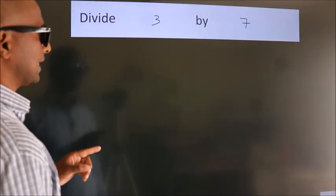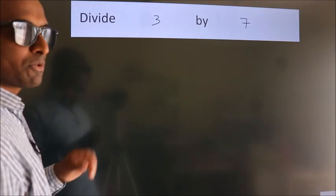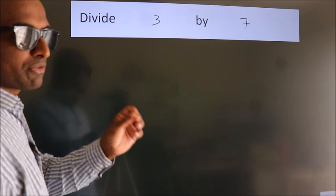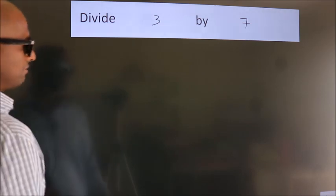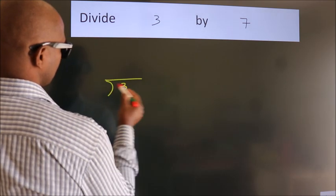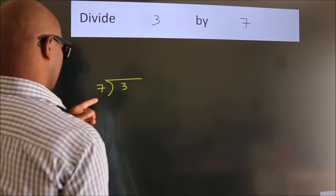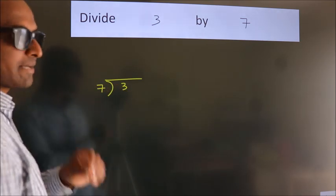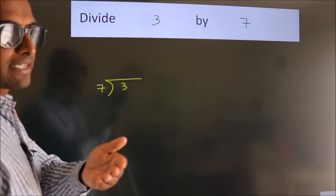Divide 3 by 7. To do this division, we should frame it in this way. 3 here, 7 here. This is your step 1.